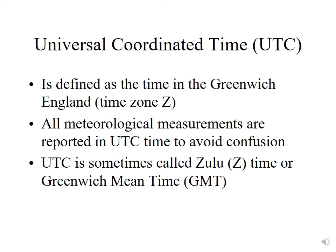We have what we call Universal Coordinated Time, or UTC. If we're taking meteorological measurements over the entire planet, it would be really confusing if everybody reported their data at local time. Instead, every meteorological observer reports their time as Universal Coordinated Time, which is the time in Greenwich, England — time zone Z. All meteorological measurements are reported in UTC to avoid confusion. UTC has several different names: it's sometimes called Zulu time, or sometimes Greenwich Mean Time, GMT.